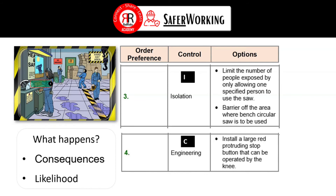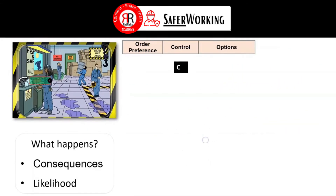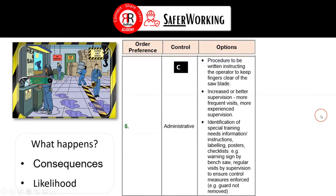For C — control — we have quite a few options. On the engineering side, we can install a large red protruding stop button operable by the knee. We can also take administrative measures such as creating a procedure, increasing supervision, and identifying training requirements.